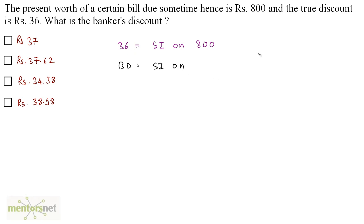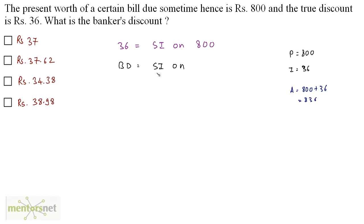So how do we calculate the amount? 36 is the simple interest on Rs. 800, so the principal is Rs. 800 and the interest is Rs. 36. We can calculate the amount: amount is basically principal plus interest. So amount equals Rs. 800 plus Rs. 36, which is Rs. 836. So I can write the banker's discount equals the simple interest on the amount, that is Rs. 836.